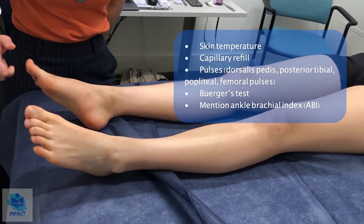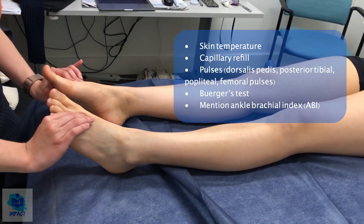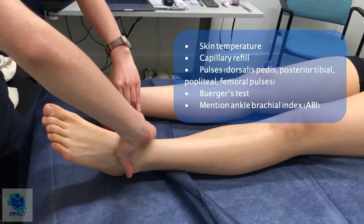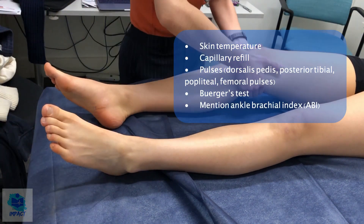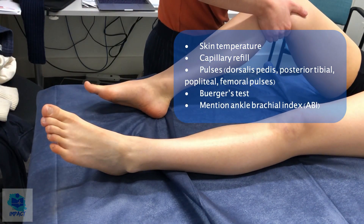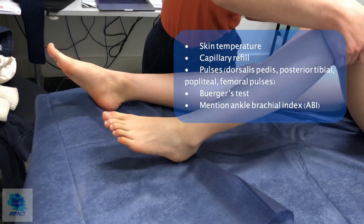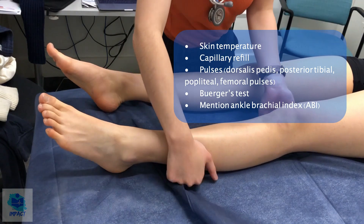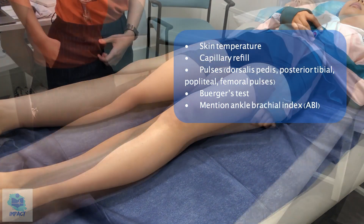Checking capillary refill — that's good perfusion. Feeling for the peripheral pulses: the dorsalis pedis and then the posterior tibial, then the popliteal. Checking the other side as well. I would also feel for the femoral pulse, but that's not required in this examination.